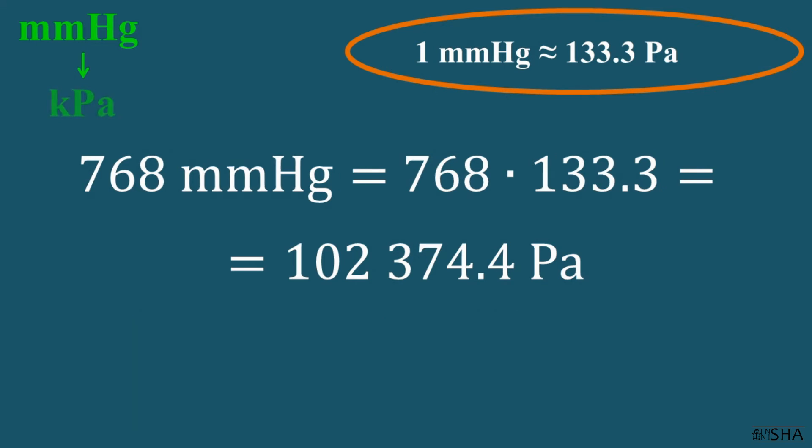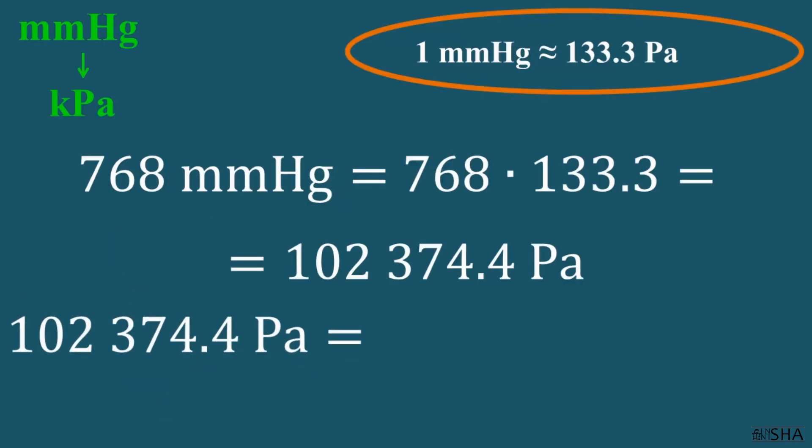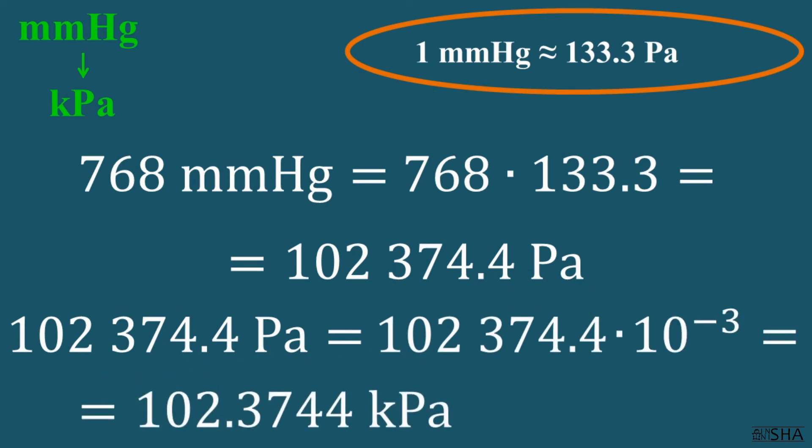Similarly, let's convert to kilopascals. We change the sign of the exponent in the multiplier of the prefix kilo. It means we multiply our number by 10 to the negative third power. And we get 102 and a pretty big decimal part. So let's better round this number. And we get 102 kilopascals.